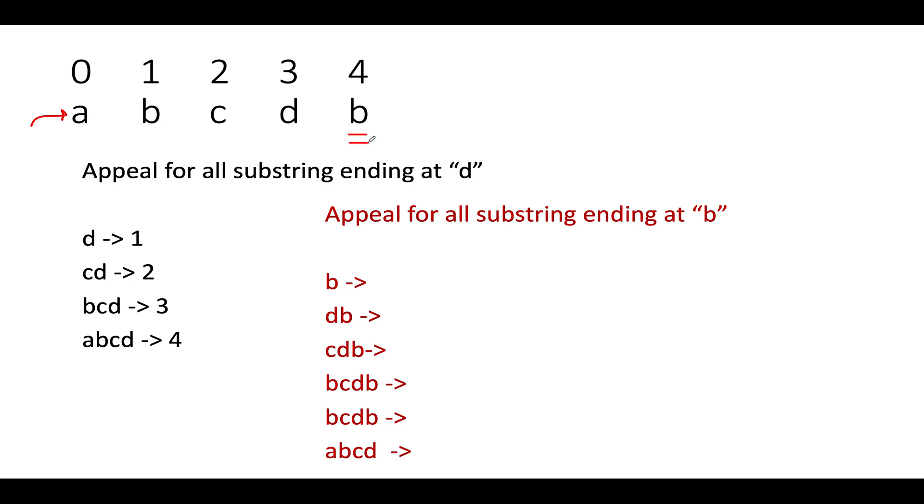I'll be using this example to derive that recurrence relation. The input string is a-b-c-d-b, so as you can see, b is duplicated over here at the fourth index. Let's hypothetically assume we are trying to identify the appeal for all these strings that are contained up till this d. The first substring would be a single d; there's only one element in it and the appeal for it would be one.